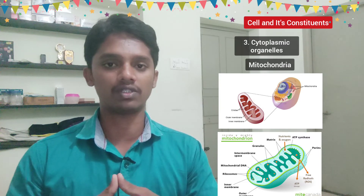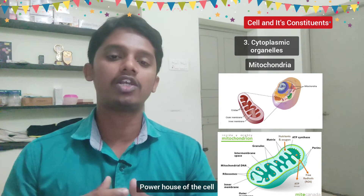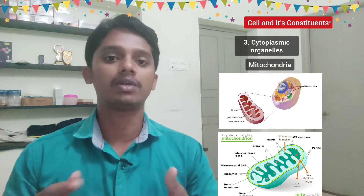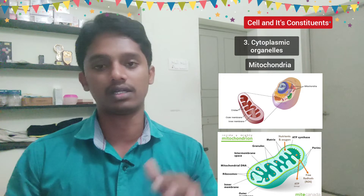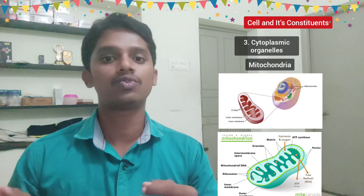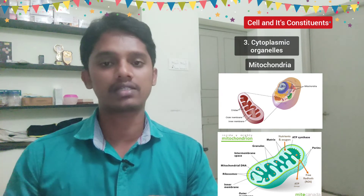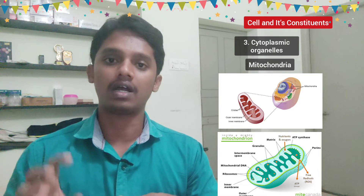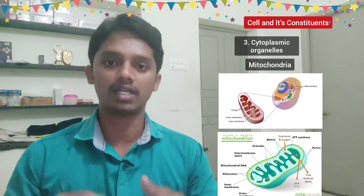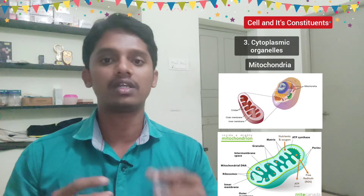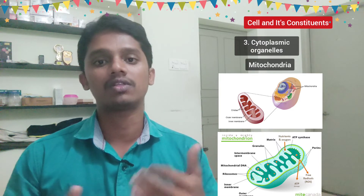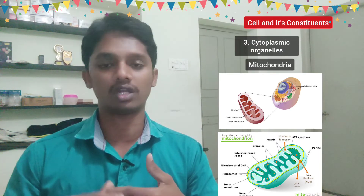Mitochondria is known as the powerhouse of the cell. If you look at its structure, it is sausage-shaped. ATP is produced inside the mitochondria and provides energy to the cell. In our body, the most active tissues and active organs — like the liver and kidney — have more mitochondria, because more activity requires more energy, so the number of mitochondria increases in those cells.